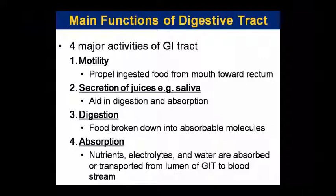The third function of the digestive tract is digestion, which breaks large food molecules into small absorbable molecules so that they can be easily absorbed. Once the food is broken down, absorption takes place. Essential nutrients, electrolytes, and water — all absorbable molecules — go into the bloodstream. These absorbable molecules in the GIT are transported from the lumen to the bloodstream. This process is called absorption.